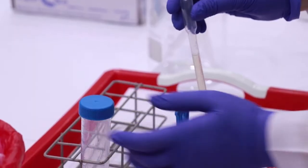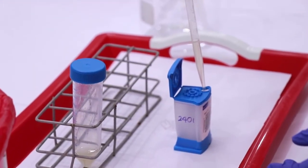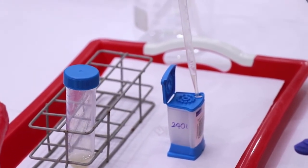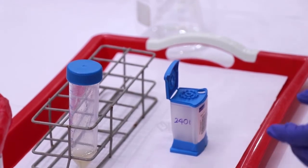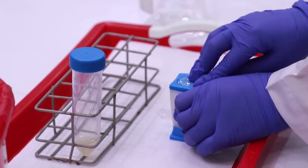Open the Xpert MTB-RIF cartridge lid. Dispense the sample reagent mixture into the open port of the cartridge slowly. Be careful not to get bubbles, as this could lead to erroneous results.